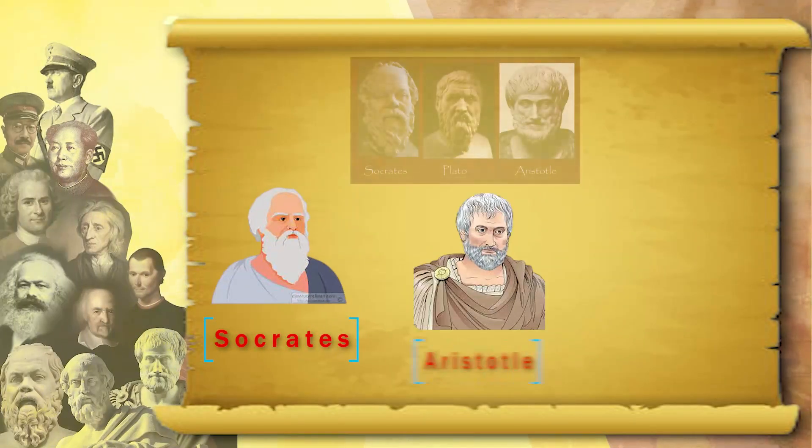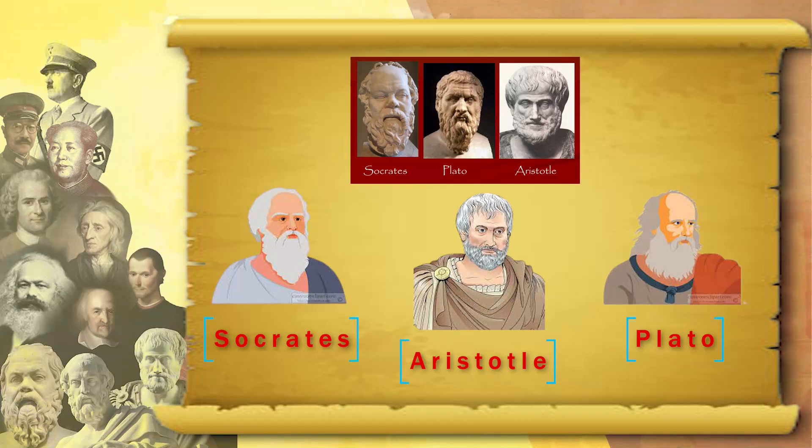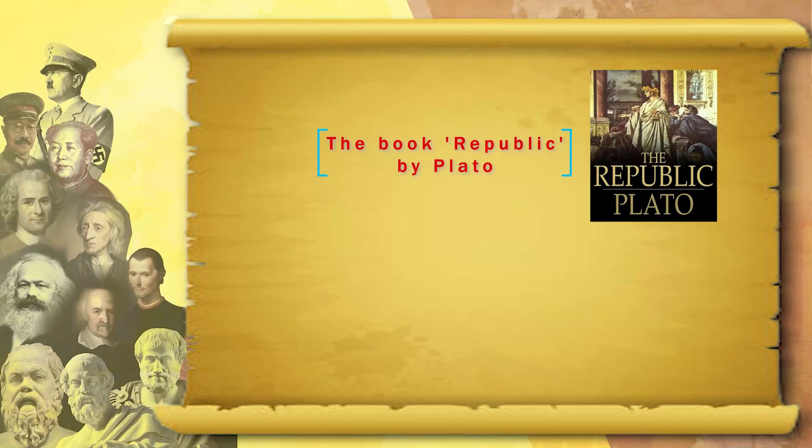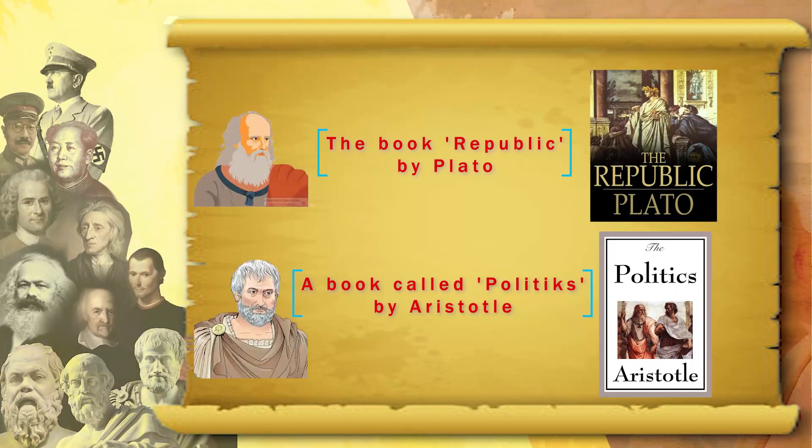Let us begin with antiquity — Greece and Rome. We all know that in antiquity, the Bronze Age civilization of Athens and Sparta had such illuminating names of big philosophers: Socrates, Aristotle, Plato. These are the foundations on which European political thought and state formation are based. Plato and Socrates have a big role to play — the very important book Republic by Plato, and Politics by Aristotle.